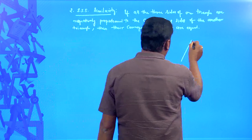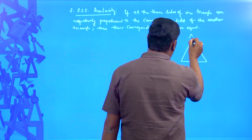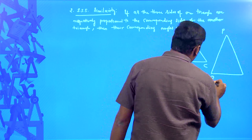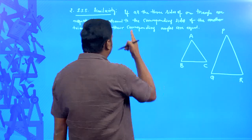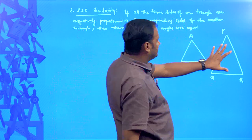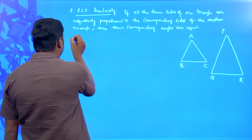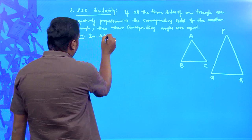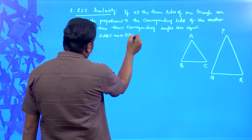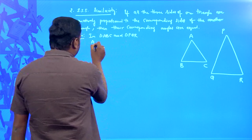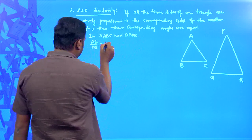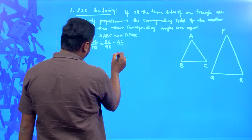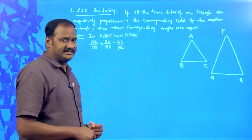I am taking a pair of triangles. This is triangle ABC and another triangle PQR, such that the sides of triangle ABC are proportional to the sides of triangle PQR. The information given is: in triangle ABC and triangle PQR, AB/PQ = BC/QR = AC/PR. Corresponding sides are proportional.